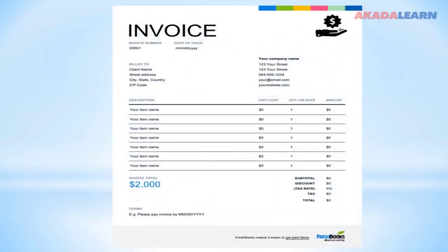This is an example of an invoice. We have the invoice number, date issued — this is like a sample. It is billed to the client, showing client name, street address, city, and the name of the company on the right-hand side. You see the description of items, the unit cost, the quantity, the rate, then the total amount.